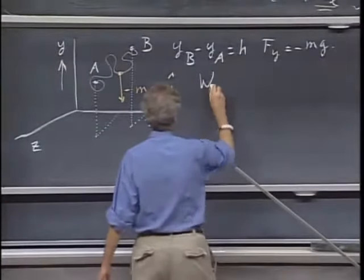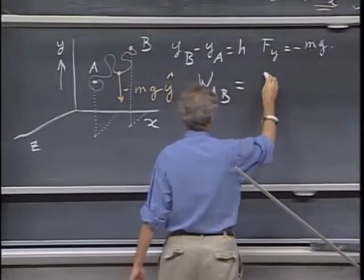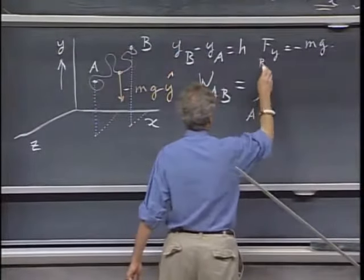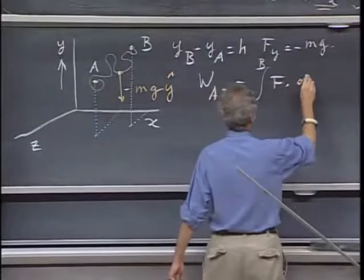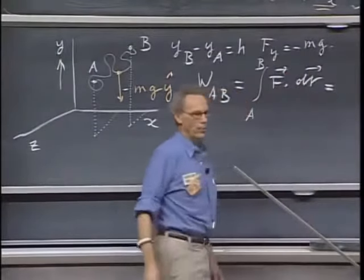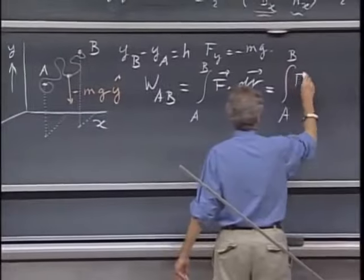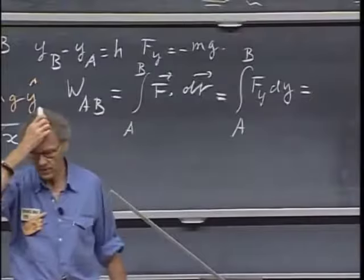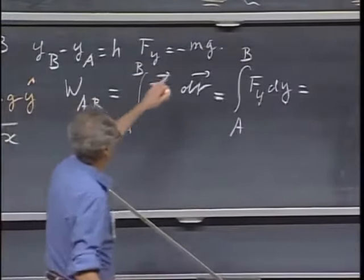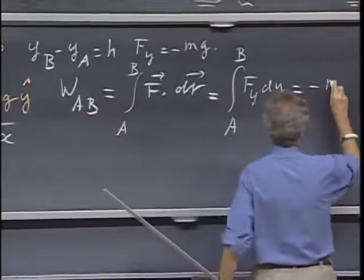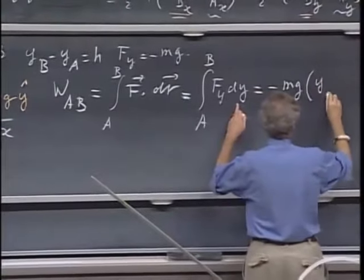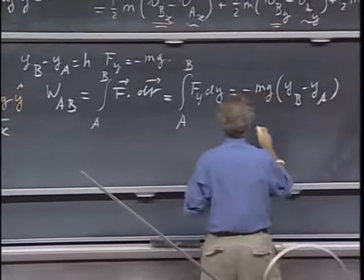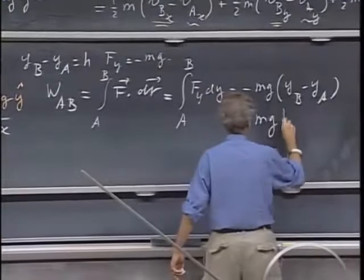And so if I calculate now the work in going from A to B, which is the integral in going from A to B of f dot dr, then the only term that I have is the one that deals with the y direction. So it is the integral in going from A to B of fy dy. And that equals minus mg times y of B minus y of A, so that it is minus mg times h.